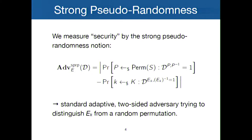First of all, I have to say what I mean by secure. By security, we mean the standard definition of strong pseudorandomness. You have a distinguisher that is trying to distinguish your construction from a random permutation. This adversary is adaptive and two-sided. Adaptive means every query can depend on the output of previous queries. The adaptive part is actually important because if the adversary is not adaptive, this problem becomes trivial and is not interesting.